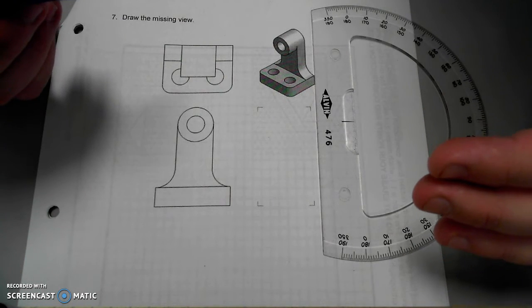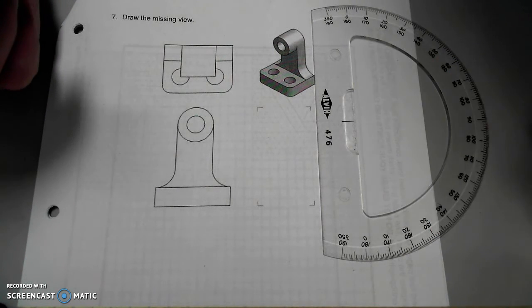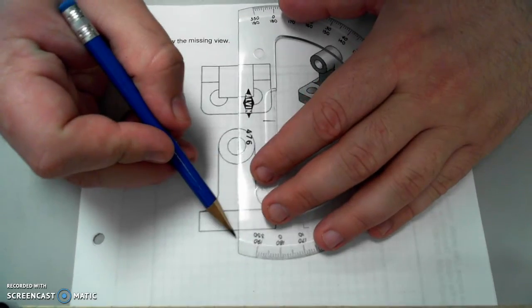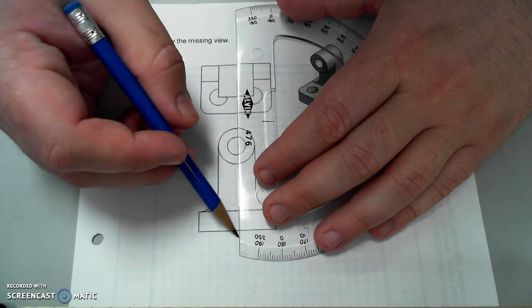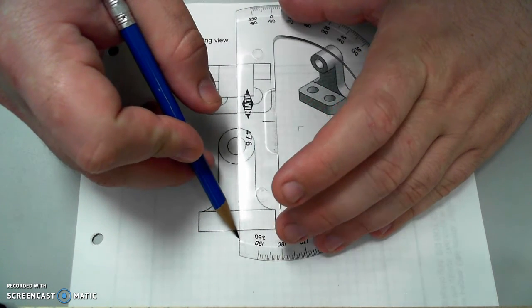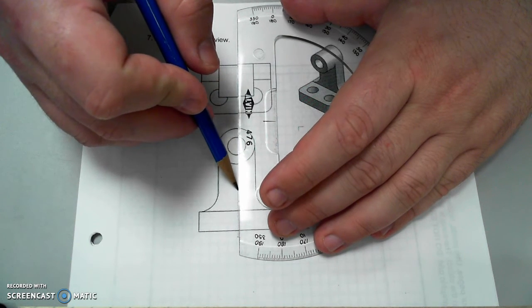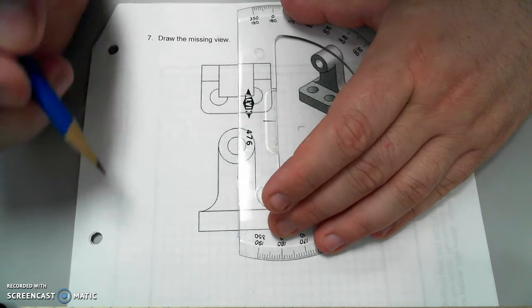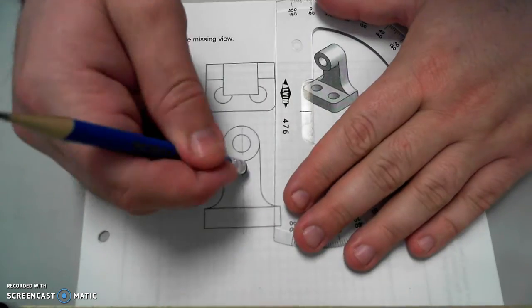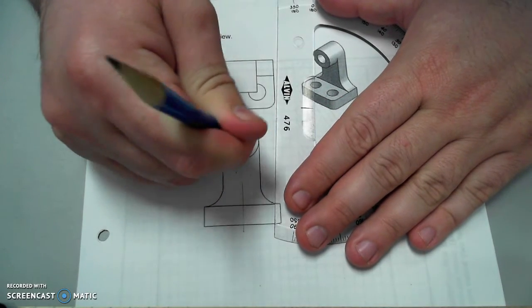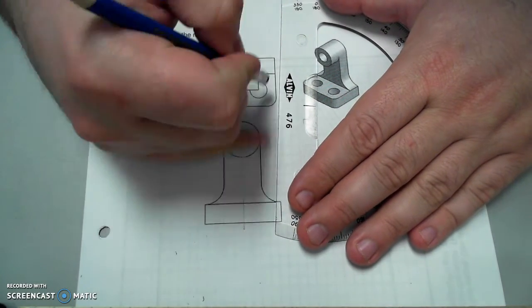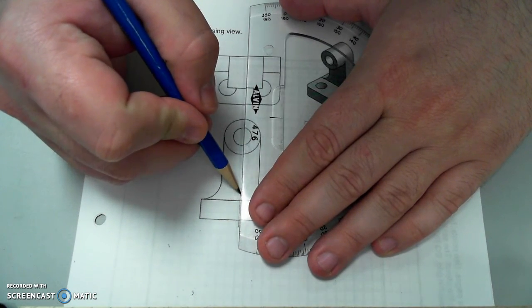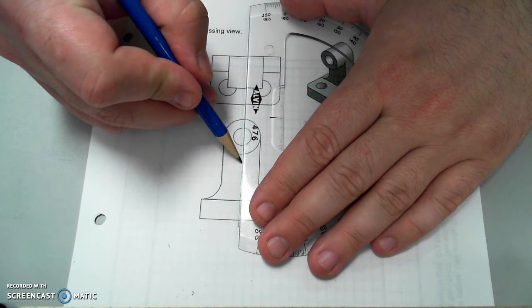Now there are some things that we probably ought to identify here. For example, the front view on this object could technically have a centerline that runs through the entire object like this. However, because there is a cylindrical feature and a hole that runs through the cylindrical feature, I'd probably draw the centerline more like this through the entire object.